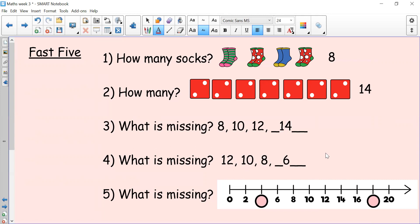A bit trickier, that one, wasn't it? And then number five, what is missing? So I'm looking at the number line, and I can see that this number line is counting in twos. So the first number that's missing is four. And the second number that's missing is eighteen. Well done, everyone.